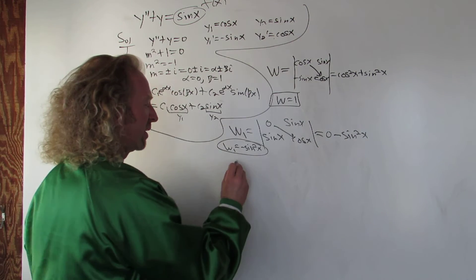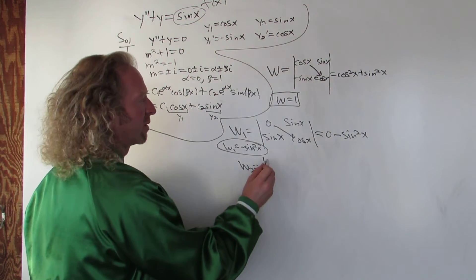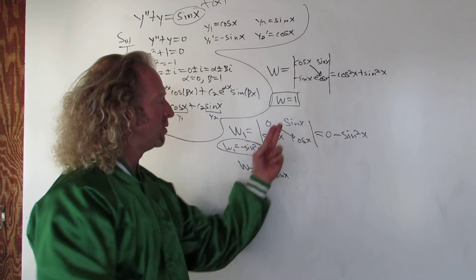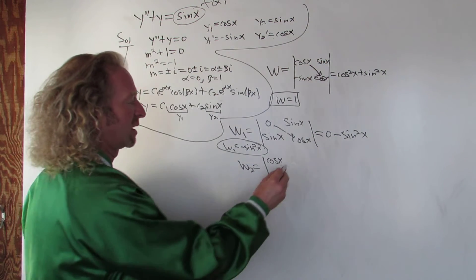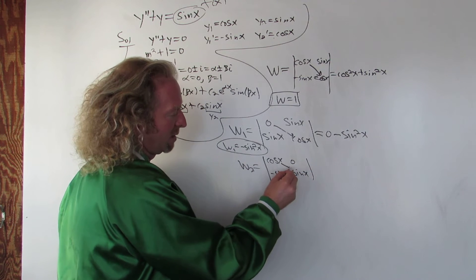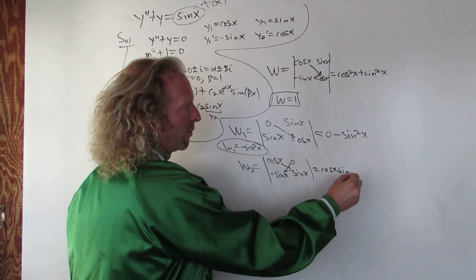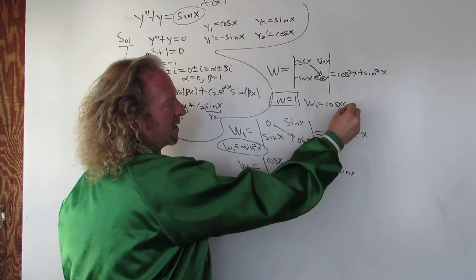We keep the second column, so sine x, cosine x. Then we find the determinant. This times this is 0 minus sine squared. w1 is equal to minus sine squared x. w2, same deal. This time you keep the first column, so cosine x, negative sine x. Then you cover up the second column and replace it with 0 and f of x. So 0 sine x. You multiply cosine times sine minus 0, so you just get cosine times sine. w2 is cosine x sine x.